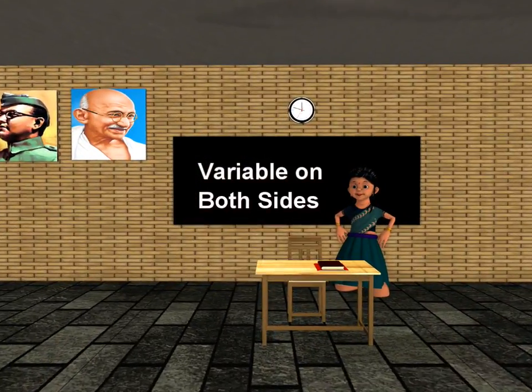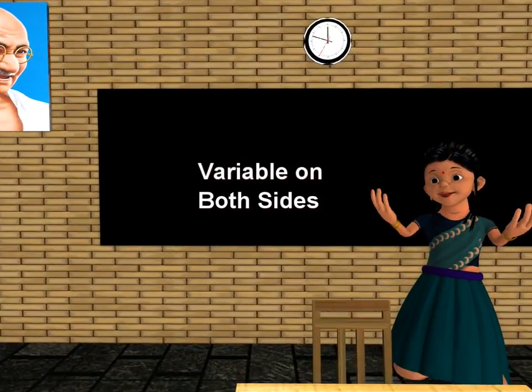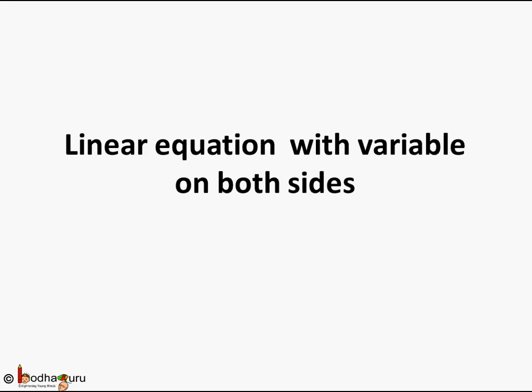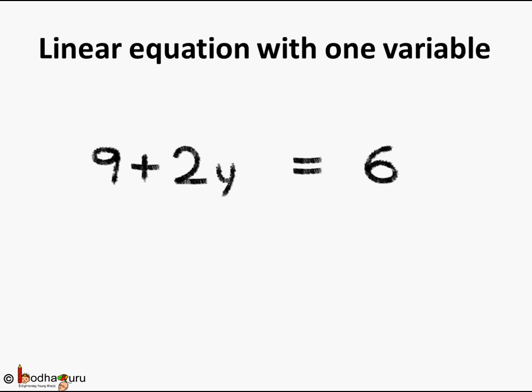Good morning children. Today we shall learn how to solve a linear equation with variable on both the sides. Here we have a linear equation with one variable, and the variable was only on one side. As you can see, here the variable is y and it is on the left-hand side of the equation.